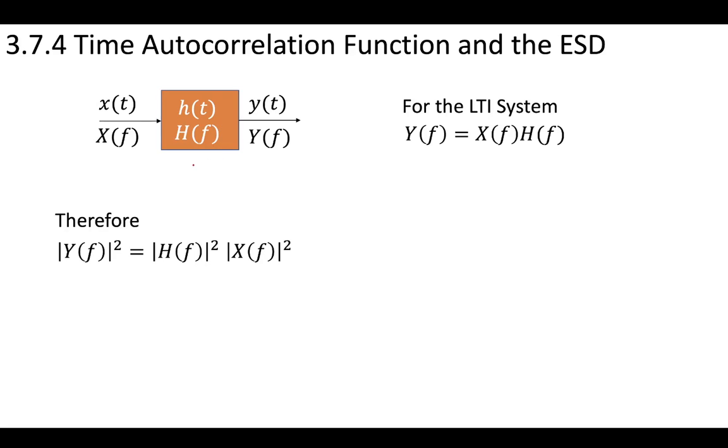If you are going to find the square of the output in the Fourier domain, in the frequency domain, it's going to be equal to the square of the transfer function multiplied by the square of the input.